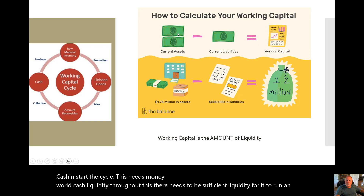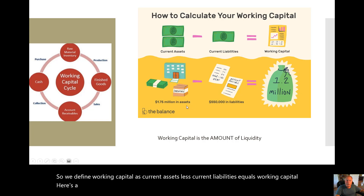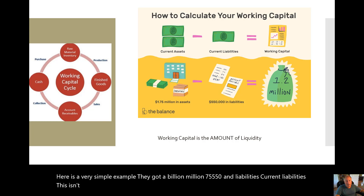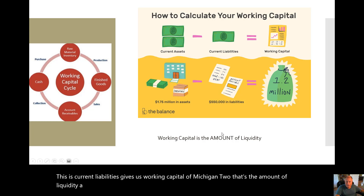So we define working capital as current assets less current liabilities equals working capital. Here's a very simple example: current assets of $1.75 million, current liabilities of $550,000, giving us working capital of $1.2 million. That's the amount of liquidity a firm may have.